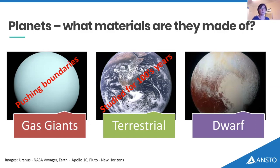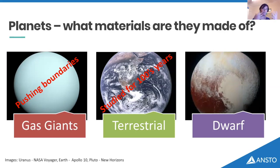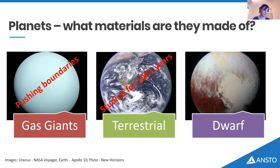Then we have the gas giants, and understanding their minerals and materials is very much pushing the boundaries of physics — from the potential of metallic hydrogen, so hydrogen gas under so much pressure and temperature that it becomes a metal, believed to be in the center of Jupiter, all the way through to very exotic materials from water and ammonia under similar pressure-temperature conditions where the protons are thought to flow through. We call these super-ionic materials, and they are thought to generate the large and weird magnetic fields of Uranus and Neptune.